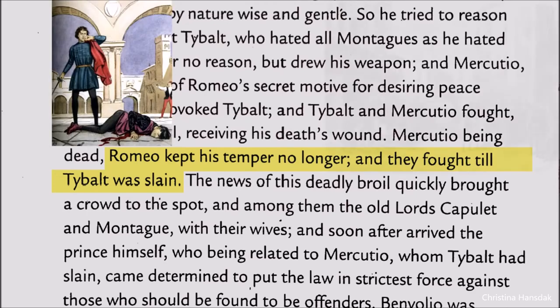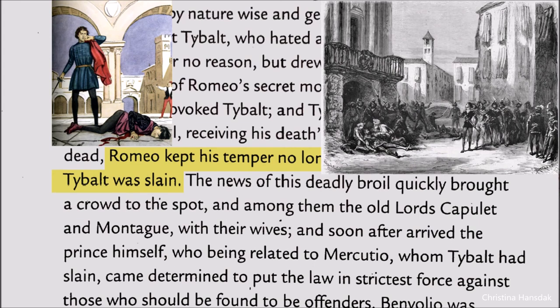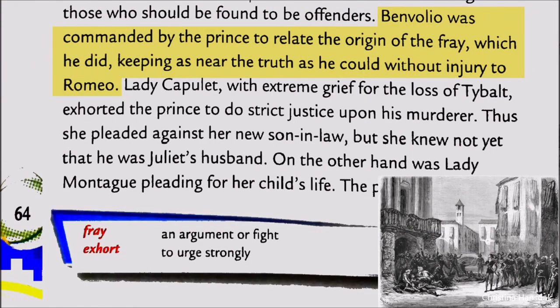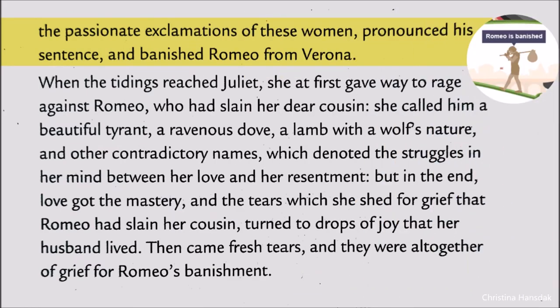This event drew a crowd to the spot. Lady Capulet and Lady Montague both arrived, and the Prince arrived too. Benvolio, who was the witness, was commanded to explain the whole matter so that the truth would prevail. Lady Capulet was in extreme grief for the loss of Tybalt, while Lady Montague was pleading for her child's life. Between these two families, the Prince pronounced his sentence and banished Romeo from Verona.